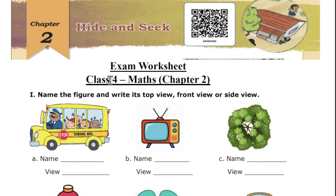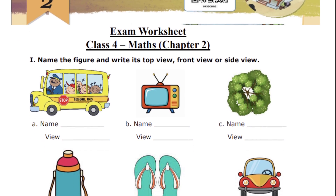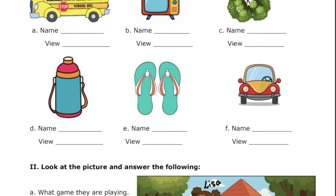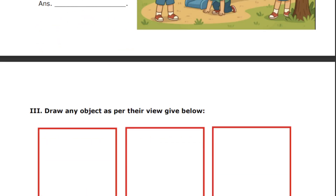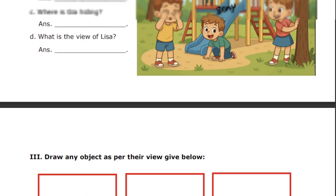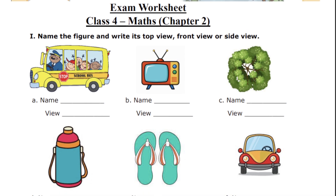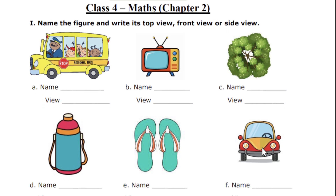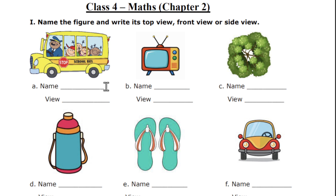Now, this is the worksheet prepared for Hide and Seek. I am only showing the first page since the full worksheet is only for students who have joined. On the first page, the task is to name the figure and write whether it is a top view, front view, or side view. For example, a bus is shown and you have to write the name and its view. For a car shown from the front, you write: name — car, view — front view.